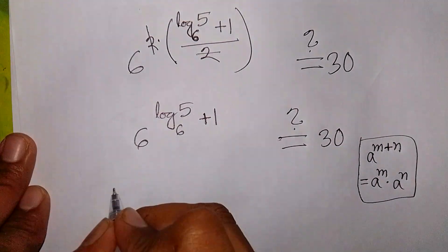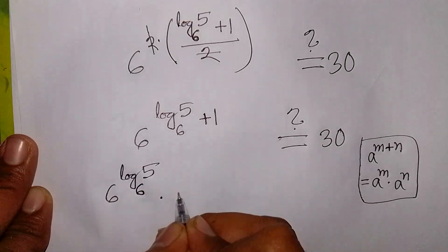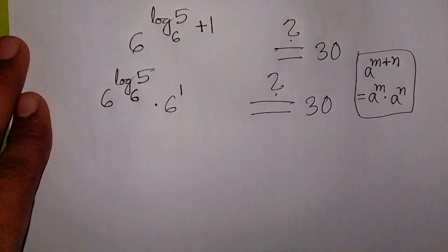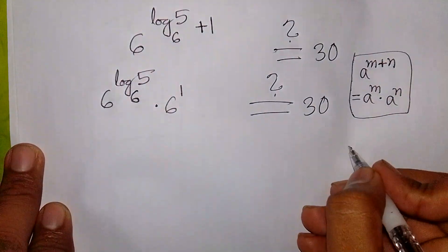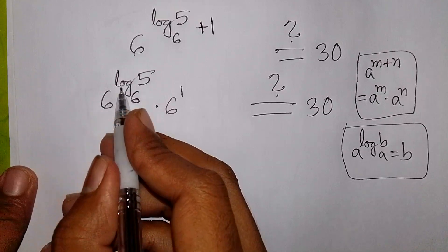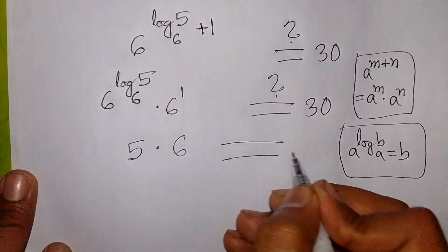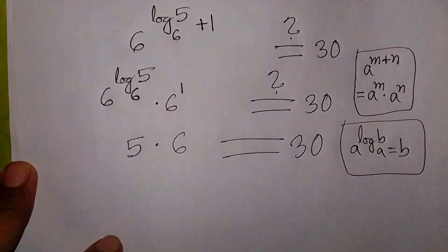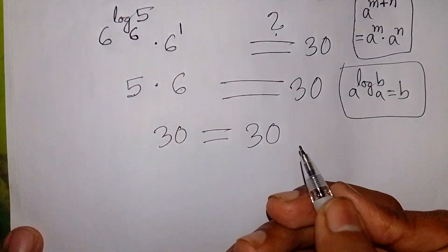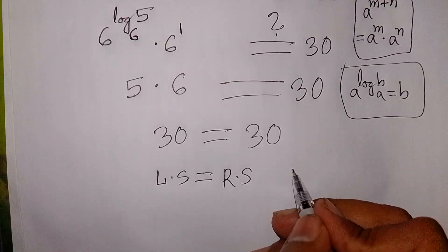So it will be 6 to the power of log base 6 of 5, times 6 to the power 1, is it equal to 30? Here we apply the formula: a to the power log base a of b is equal to b. So 6 to the power log base 6 of 5 equals 5, times 6 to the power 1 which is 6, equals 30. So 5 multiplied by 6 is 30, and 30 is equal to 30. Left side equals right side, so the value of x has been verified.